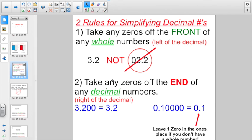And the second rule, take off any zeros off the end of any decimal numbers. Only at the end. Here we have 3 and 200 thousandths. That's really equivalent to 3 and 2 tenths. Or 1 and 10,000 thousandths. That could be simplified down to just 1 tenth. And the last little reminder, you want to leave one zero in the ones place if you don't have a whole number.